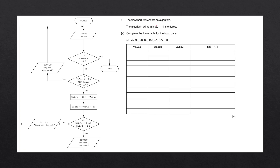The flowchart represents an algorithm. The algorithm will terminate if negative 1 is entered. The purpose of a trace table is to trace what the values of the variables are as the program is executed using this input data. We've been given a flowchart on the left, some input data, and a table consisting of 4 columns with variable names and outputs. In each column, we're going to be tracking how these variables change using this flowchart.